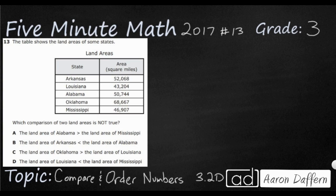So we are looking at the land area of five different states: Arkansas, Louisiana, Alabama, Oklahoma, and Mississippi. Each of these areas goes up to the ten thousandth place. They're fairly close to each other, so we're going to compare these.